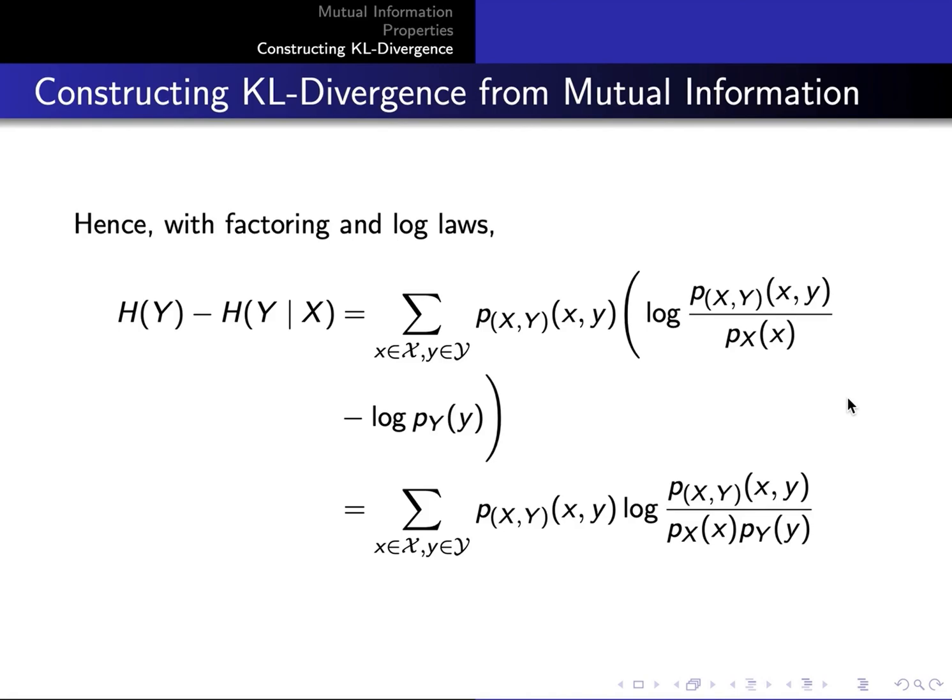Now we may subtract the two. So factoring out the joint distribution, we are left with a subtraction of logs. And the probability with respect to y is on the denominator here.